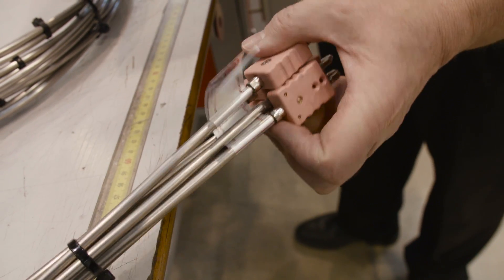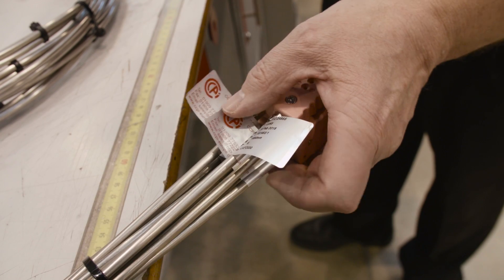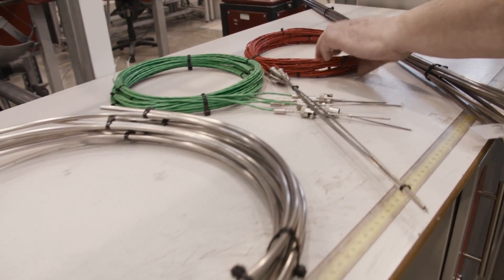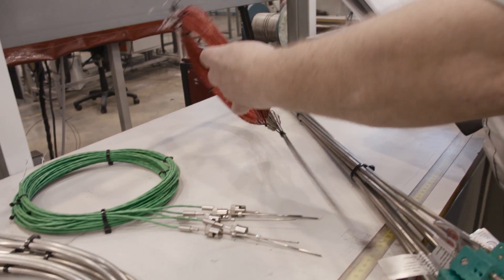Mineral insulated thermocouples are the most common construction used in industry. This is due to its availability in a wide range of types and sizes and its flexibility.